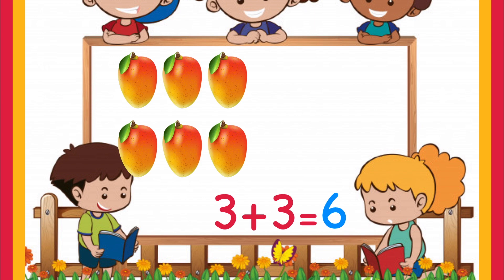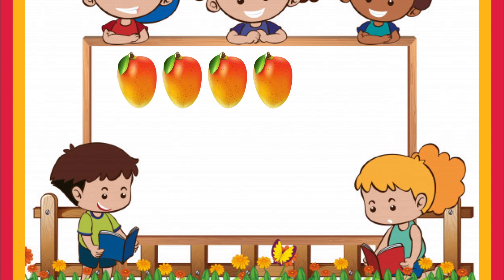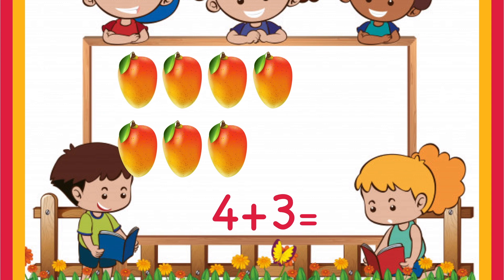Let's see another one. You have one, two, three, four mangoes and your mom gives you another three mangoes. So here the addition you are going to do is four plus three, which means you have four mangoes and you are going to add another three. Let's count how many total mangoes there are with you: one, two, three, four, five, six, seven. So the answer is seven.